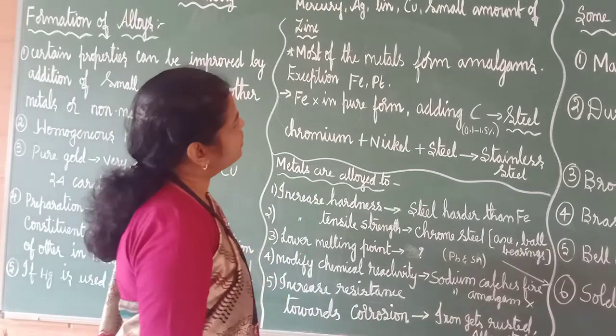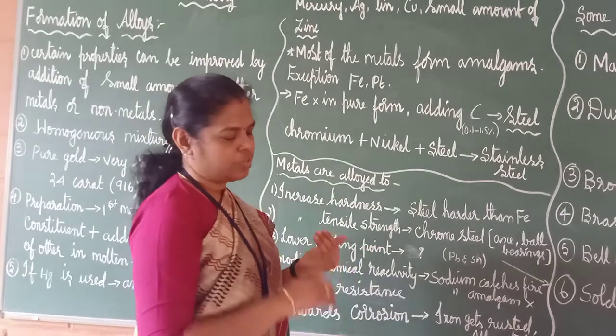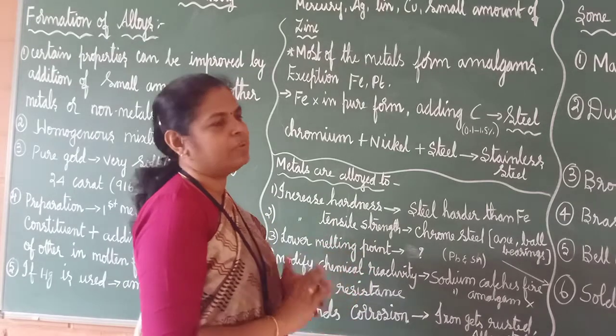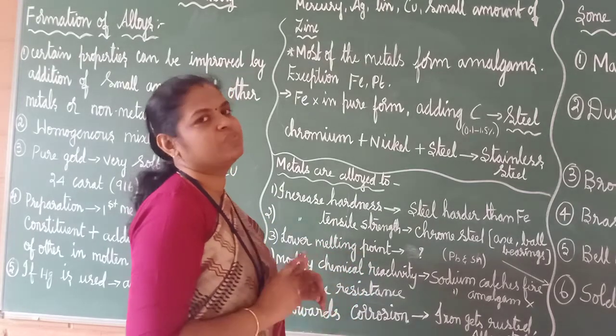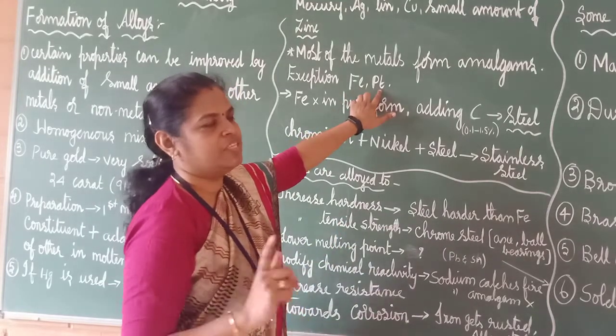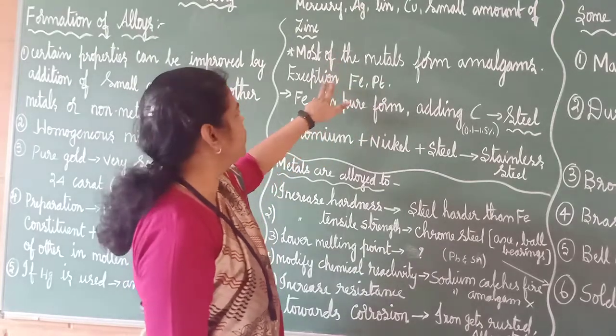So, most of the metals which forms amalgams, I have given many examples like sodium amalgam or many other, whichever metal we are adding, that amalgam you can call. But there are some exceptions. These two metals, iron and Pt. What is Pt? Yes, you have studied. These two, they will not form amalgam.